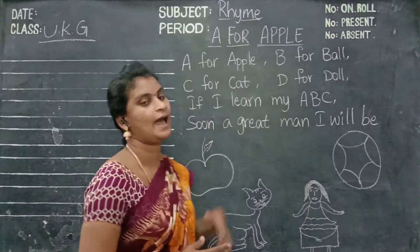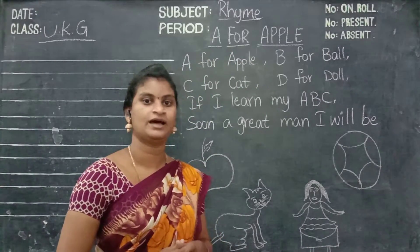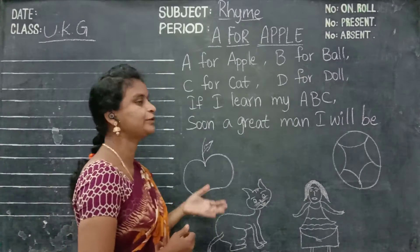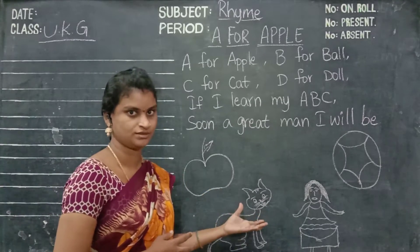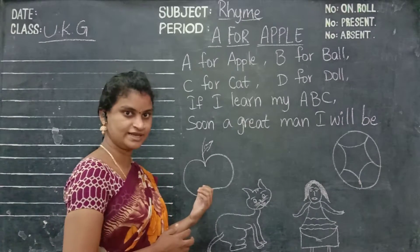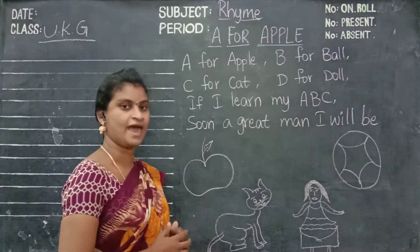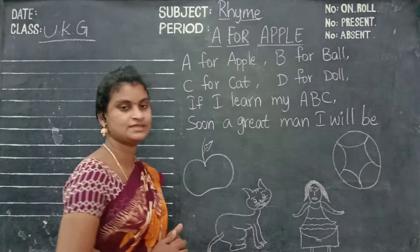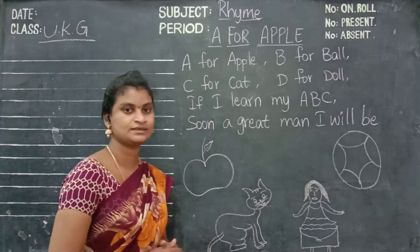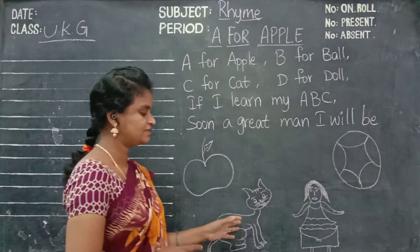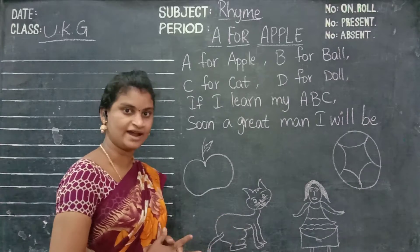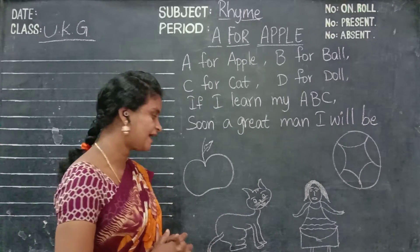A for apple. I draw some pictures. I think you can identify these pictures. Yes, what is this? This is an apple. What is this? This is a cat.